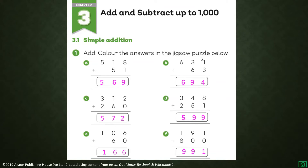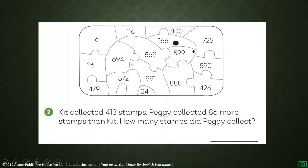So we have the jigsaw puzzle here. Any color that you like. Find 569 here and color it. Next is 694 — color here. Next is 572 — color five seven two. Then 599 — color five nine nine. And 166 — color one six six. And last, 991 — color nine nine one. Do not color the others, only the answers.